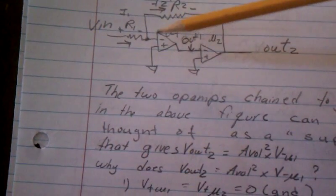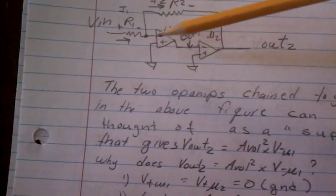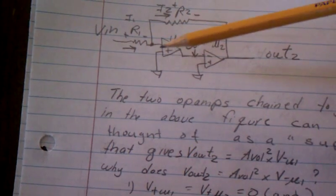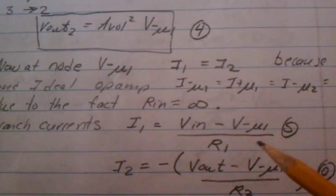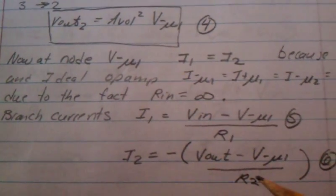We have I1 equals I2 at node V_minus U1, because this is an ideal op-amp. No current can come in because R_in is infinity. We write out the branch currents just like we would previously.